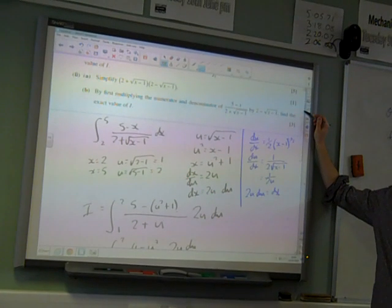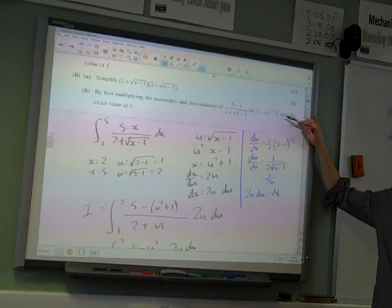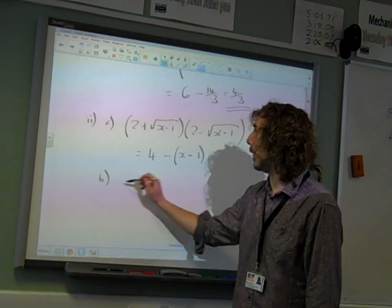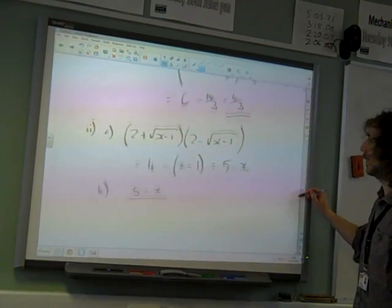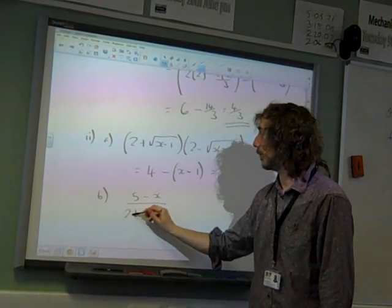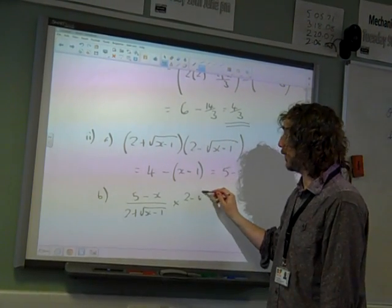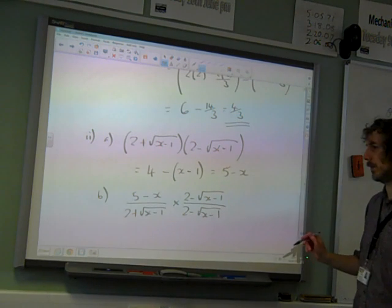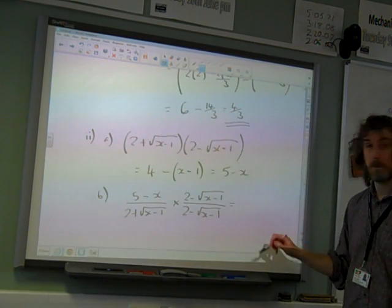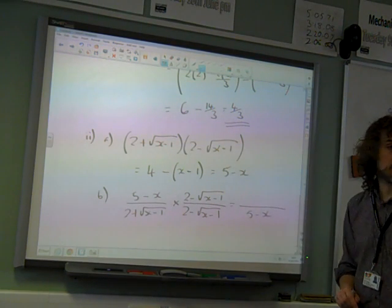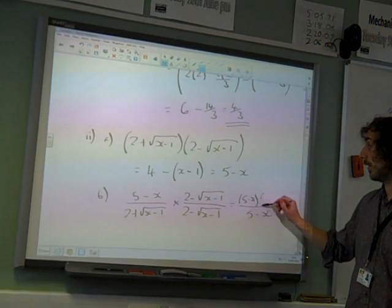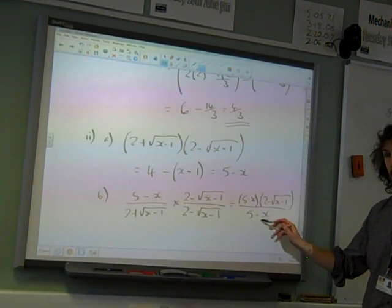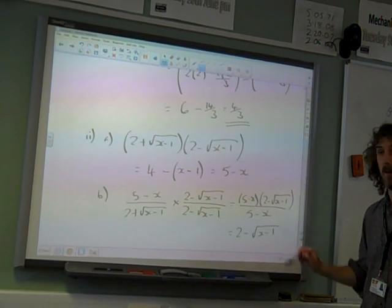By first multiplying the numerator and denominator of that by this, find the exact value of i. So we're back to our integral again. But this time, in part b, we are doing 5 minus x over 2 plus root x minus 1. And we're multiplying it by 2 minus root x minus 1 over 2 minus root x minus 1. I think that's what they've asked us to do, isn't it? Which we now know gives us 5 minus x on the bottom, 5 minus x on the top, and 2 minus root x minus 1 up there as well. So this time the 5 minus x cancels. Leaving us with 2 minus root x minus 1.